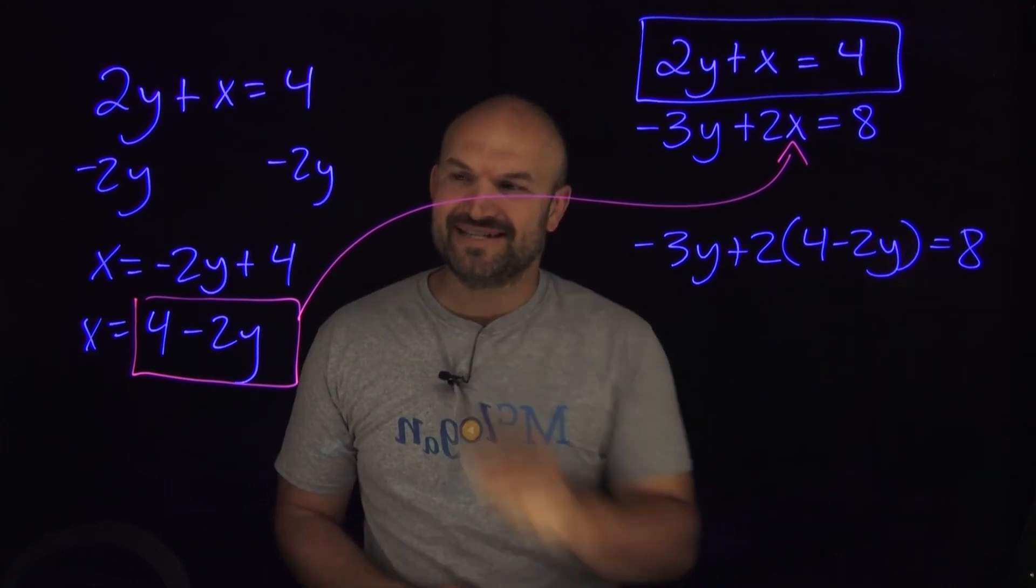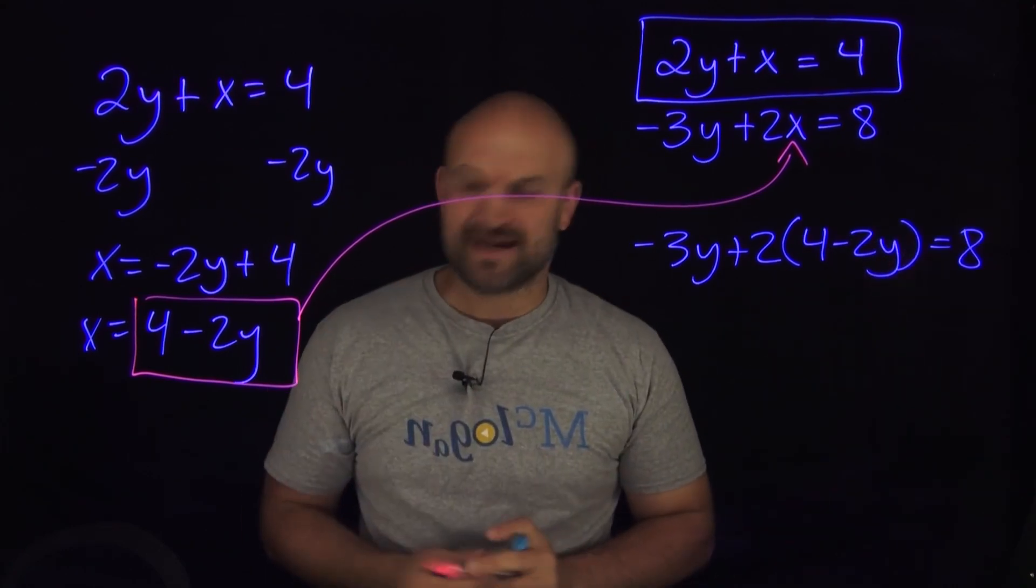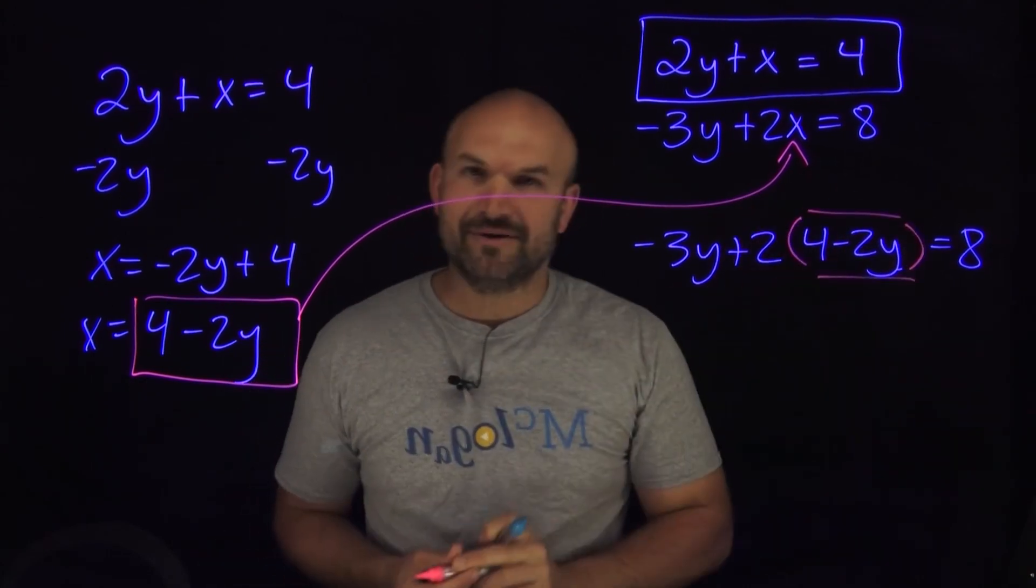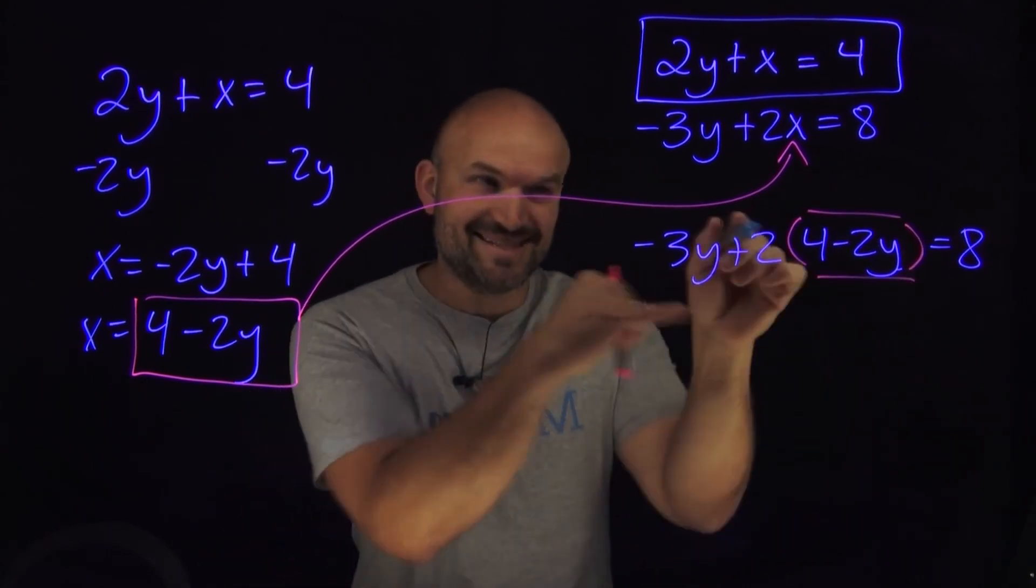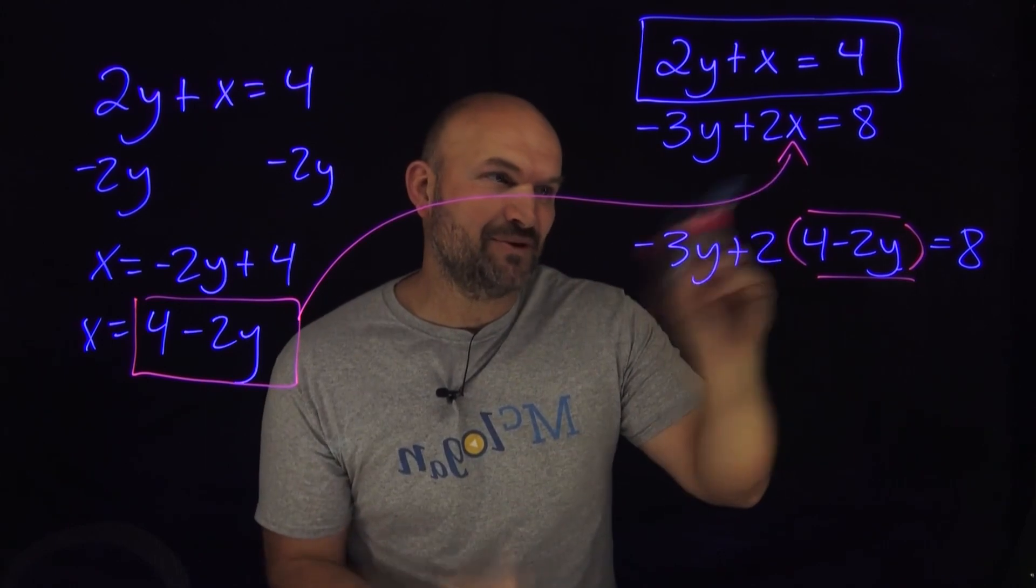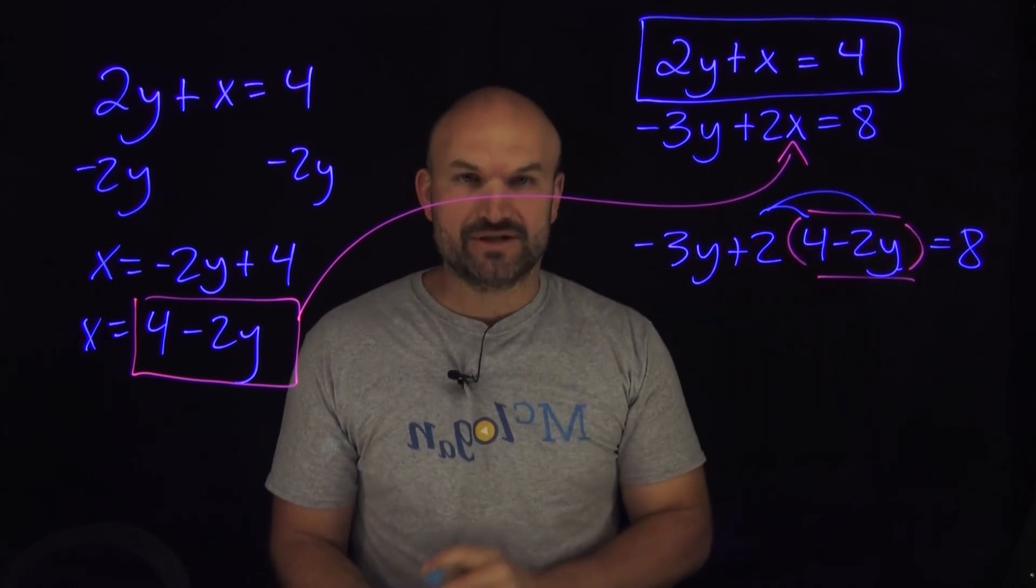And if I was going to get a little extra fancy, I could go ahead and use the proper pink box. Now, I don't want to make a perfect box, because I want you to understand this is still parentheses, right? So we got to make sure we're going to distribute or multiply this 2 times both of these terms.